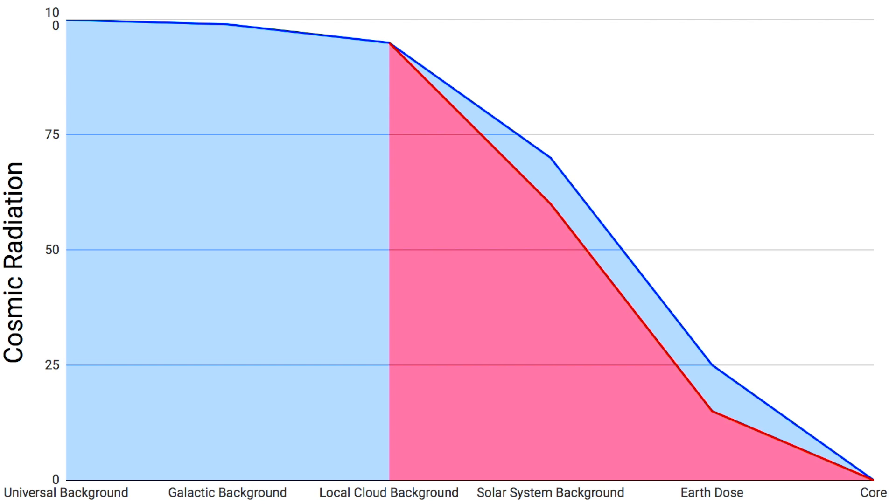But as we come out of the local cloud, we are watching one shield against this radiation disappear. The pink area is the luxury we have enjoyed inside the cloud. As we exit, it will be disappearing in favor of the blue.